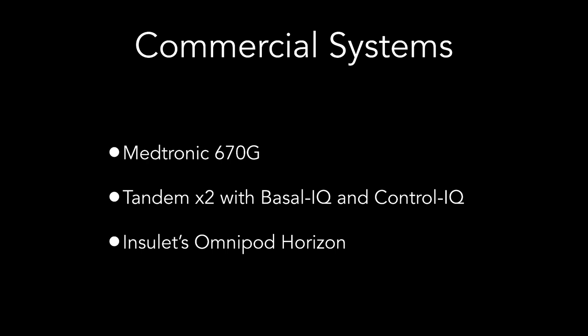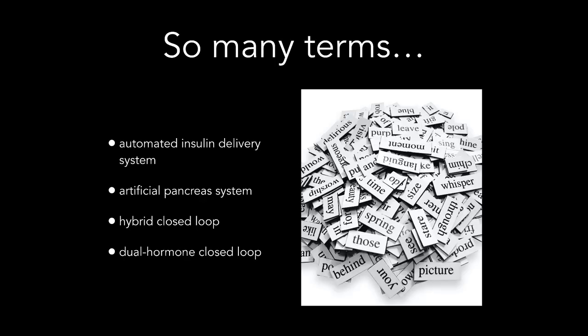With so many terms, you might get confused — you may have heard 'automated insulin delivery' or 'AID system,' 'artificial pancreas,' 'hybrid closed loop,' or 'dual hormone closed loop.' There are a lot of terms out there, but the general idea is a system that takes data about what you've eaten, what insulin has been given, and other inputs, predicts your blood sugar, and then automates your insulin delivery based on that prediction.